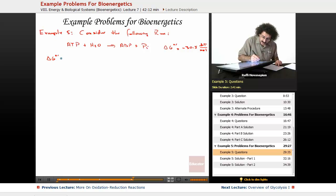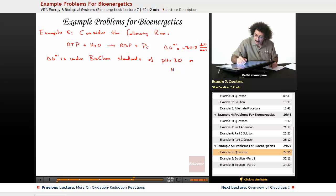Now, delta G is under biochem standards, right? Is under biochem standards of pH equal to 7.0 or a hydrogen ion concentration equal to 10 to the minus 7.